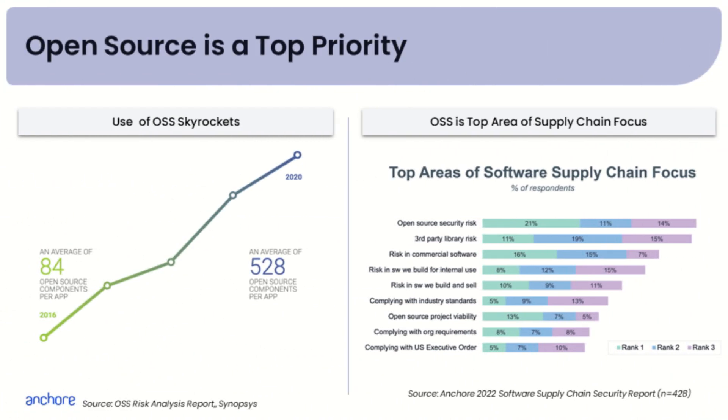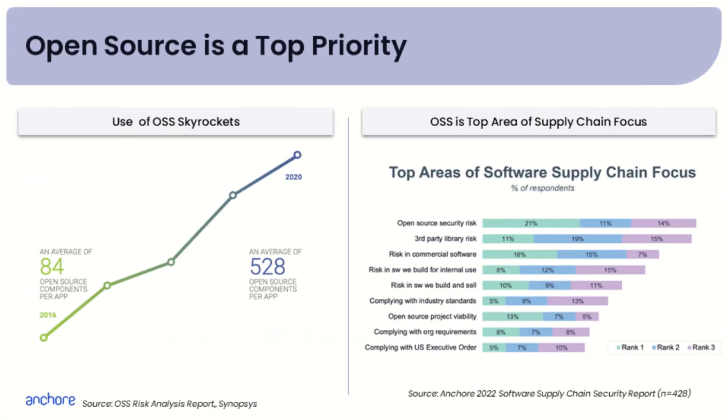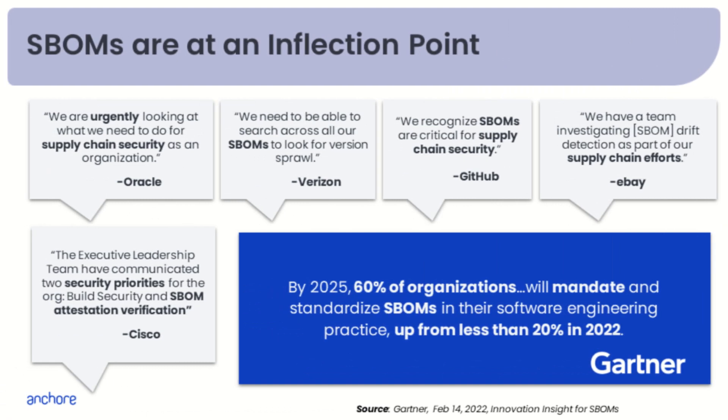Open source has become a top priority — you've seen it become the foundation of everything we do. With the use of open source skyrocketing, we now have an average of 528 open source components per application. So while you may think you're not impacted because you use commercial products, you must realize that a big chunk of the code in that commercial application is made of open source projects. Whether or not you like it, you have a lot of open source inside of your systems. By 2025, 60 percent of organizations will mandate and standardize Software Bill of Materials in their software engineering practices, up from less than 20 percent in 2022.